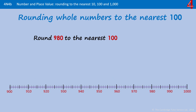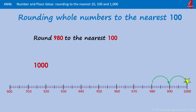This time we're rounding 980 to the nearest 100. You can see that this time it's nearer to 1000. So don't forget that even though a thousand is a multiple of a thousand, it's also a multiple of a hundred. 980 rounded to the nearest 100 is 1000.